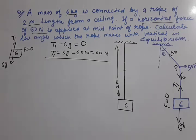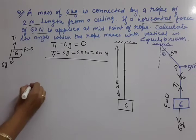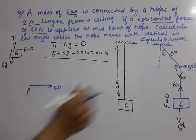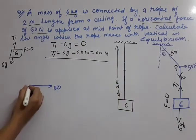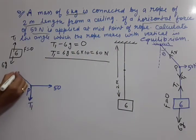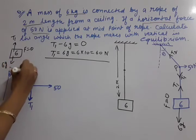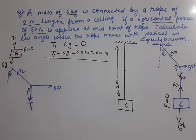Now let us focus on the second free body diagram — for point P. At point P, 50 Newton force is applied horizontally. T1 acts downward. T2 is present at an angle. The angle T2 makes with the vertical is theta. By extending the vertical line and using alternate angles, theta also appears at point P for T2.